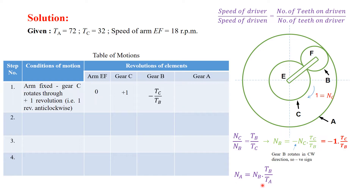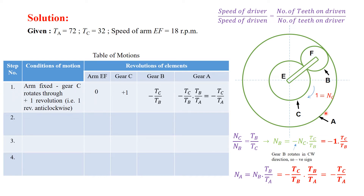The relationship gives Na = Nb × (Tb / Ta). Substituting the value of Nb, we get Na = −(Tc / Ta). There is no negative sign issue here because gear B is rotating clockwise and gear A will be rotating anticlockwise. For Step 2, the arm is again fixed and gear C rotates through plus x revolutions.